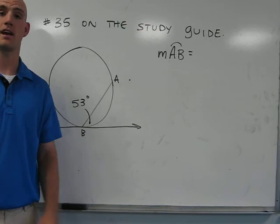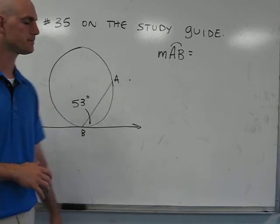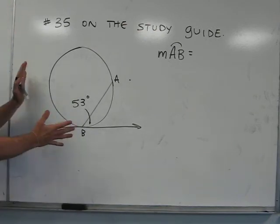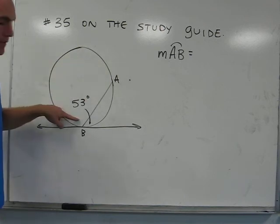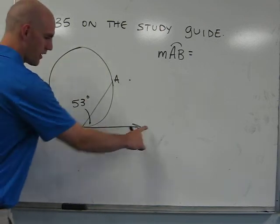This is number 35 on your study guide for chapter 10 test. We have a circle with a chord AB inside and a tangent line on the outside.